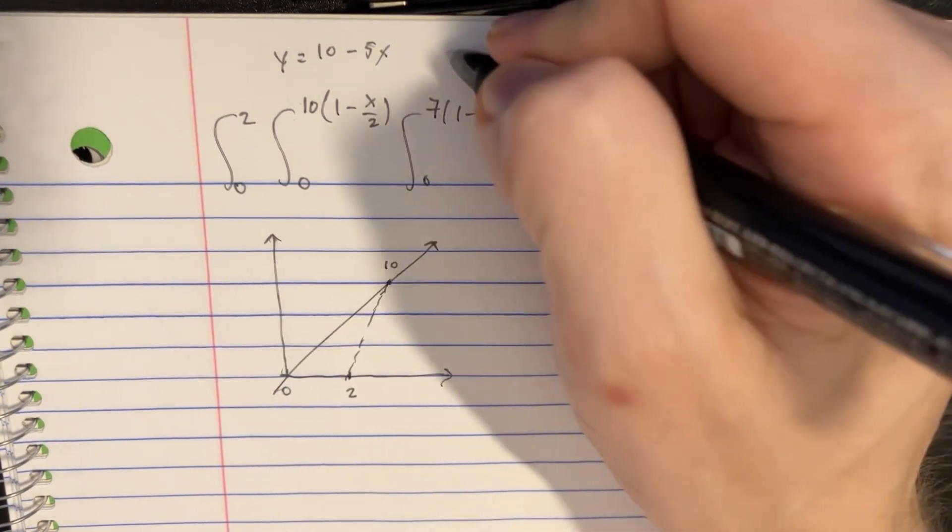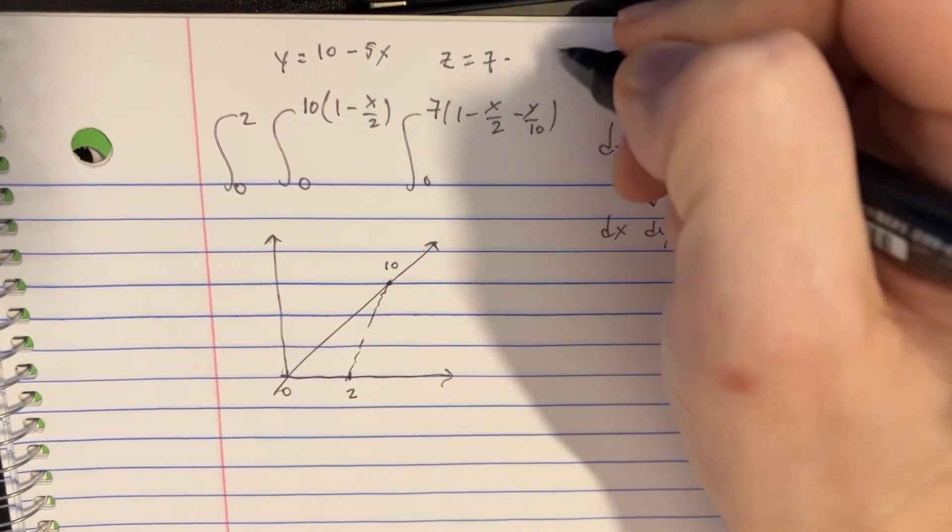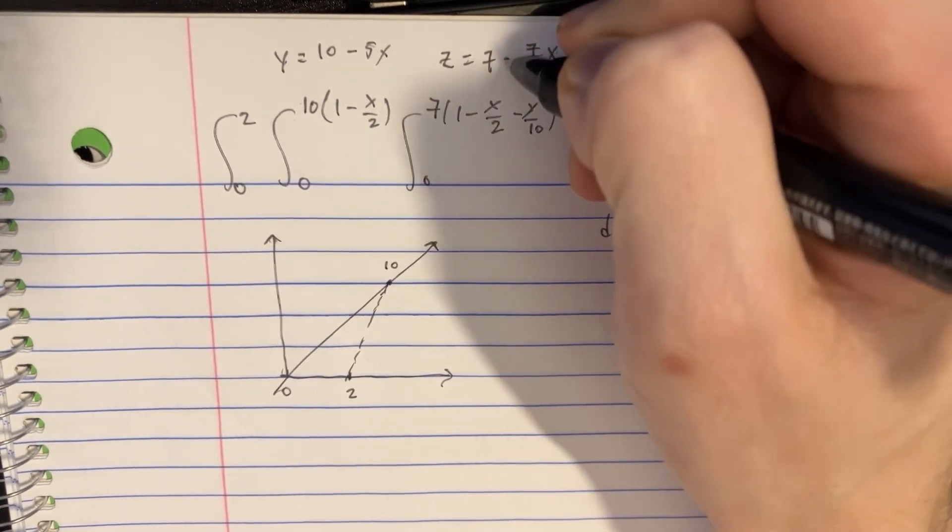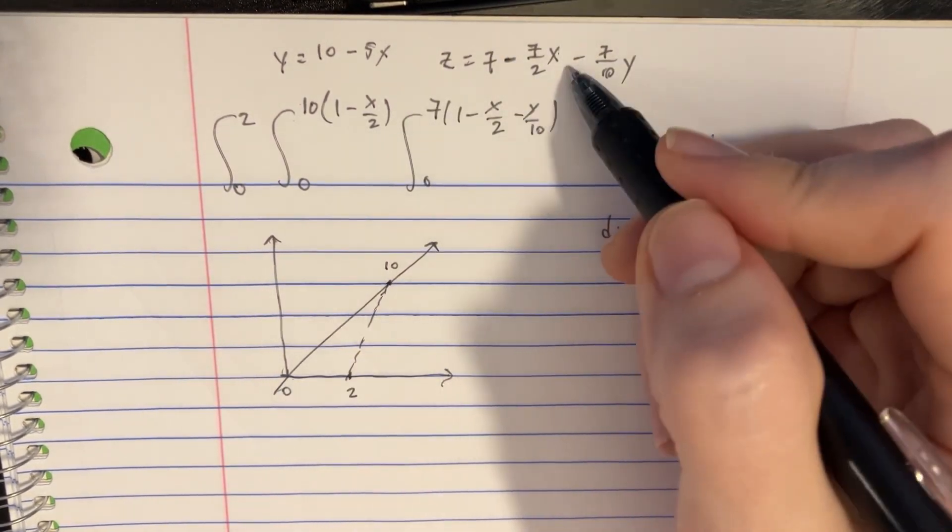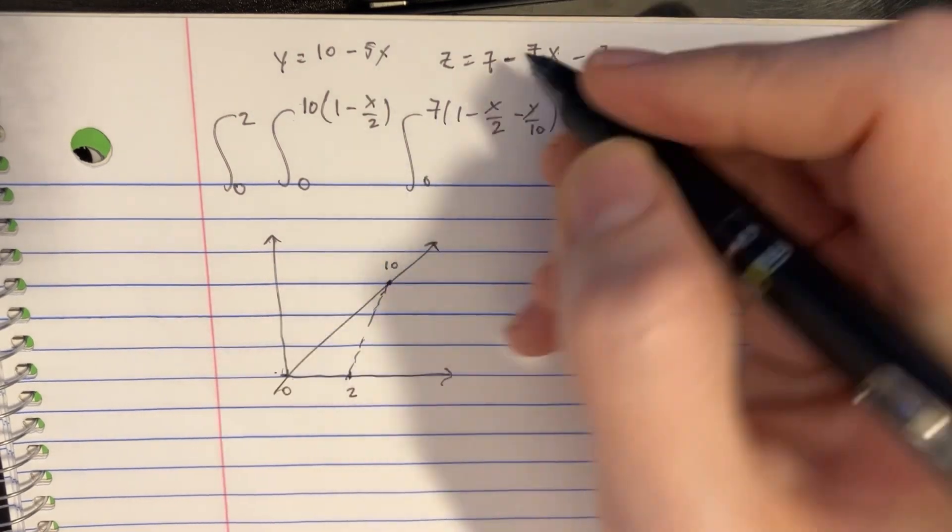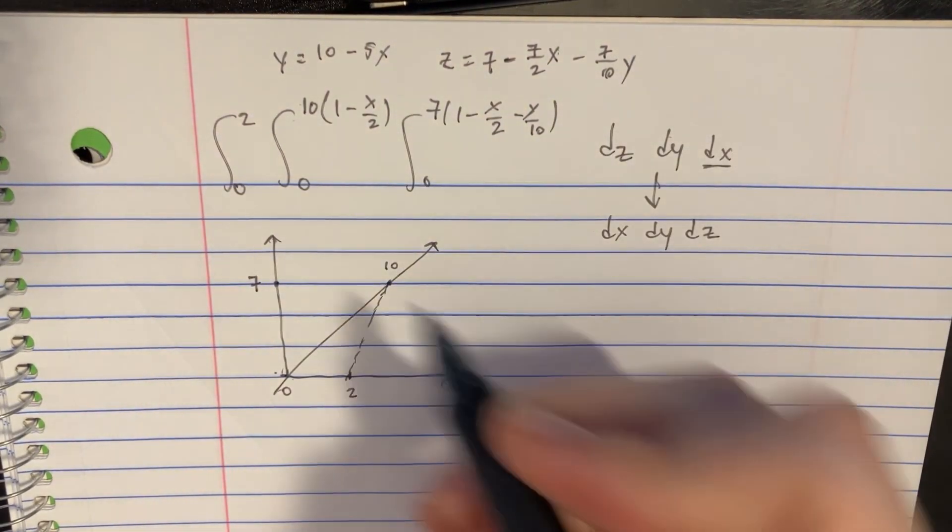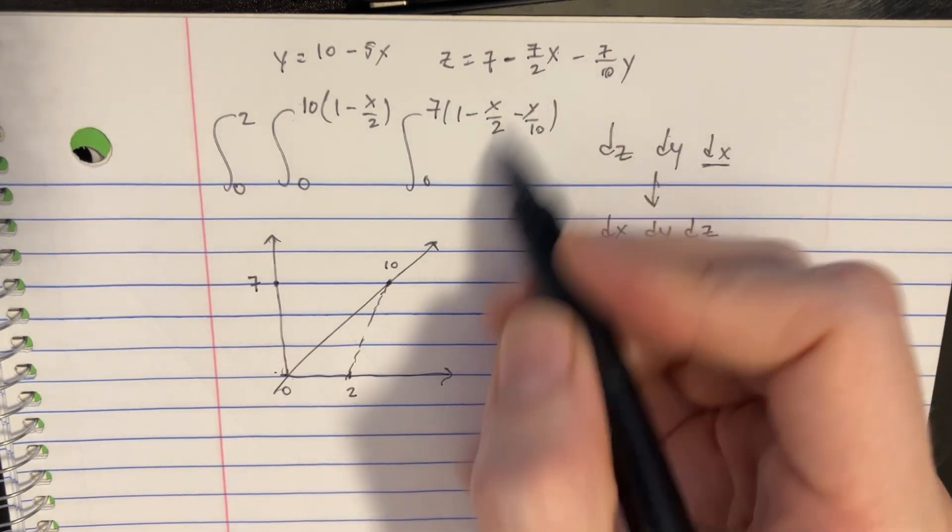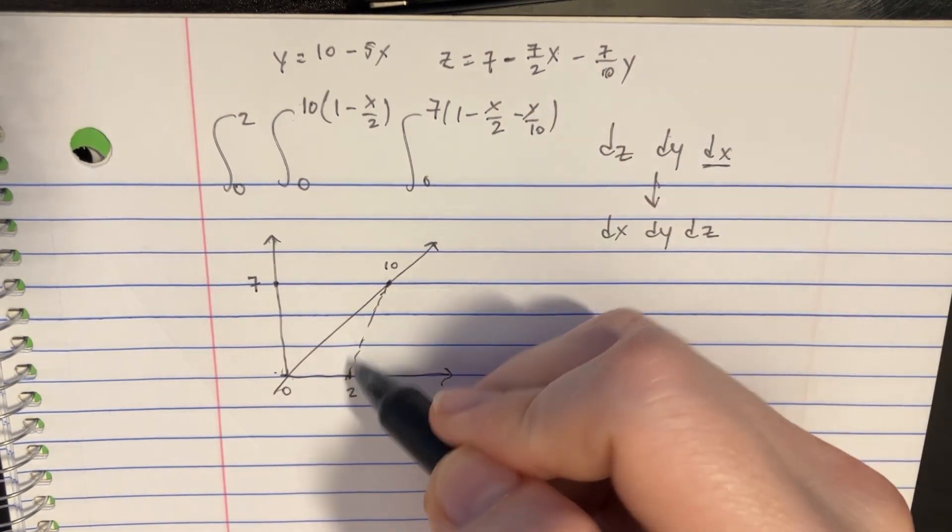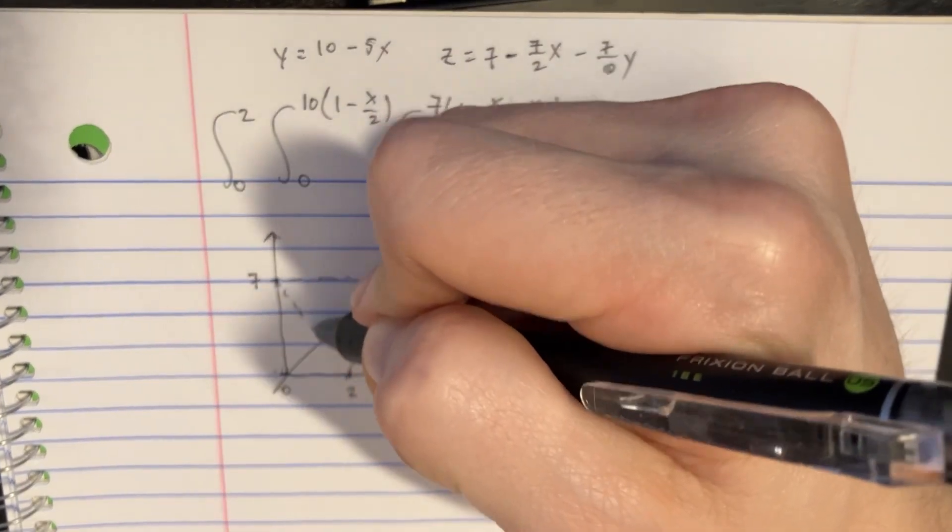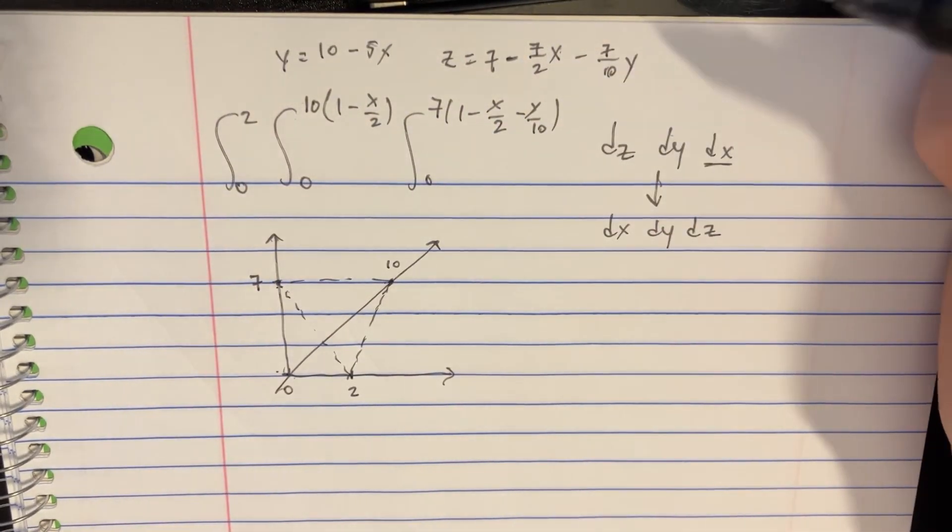And then we'll get this equation z equals 7 minus 7 over 2x minus 7 over 10y. And that means that if x and y are 0, then z is 7, so that's going to be up here. And then we can plug in 10 for the y and 2 for the x, and we'll just notice that basically these things will connect and form this little shape.